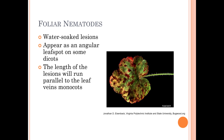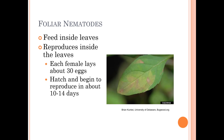Some of the symptoms you'll see are water-soaked lesions. On dicots, they appear as angular leaf spots, and on monocots, the lesions will often run parallel to the leaf veins. Foliar nematodes feed on the inside of leaves. They look a lot like leaf miners — you would need to know the plant and may need to have it tested to confirm. Usually with leaf miners, if you hold something up to the light, you can see larvae inside.